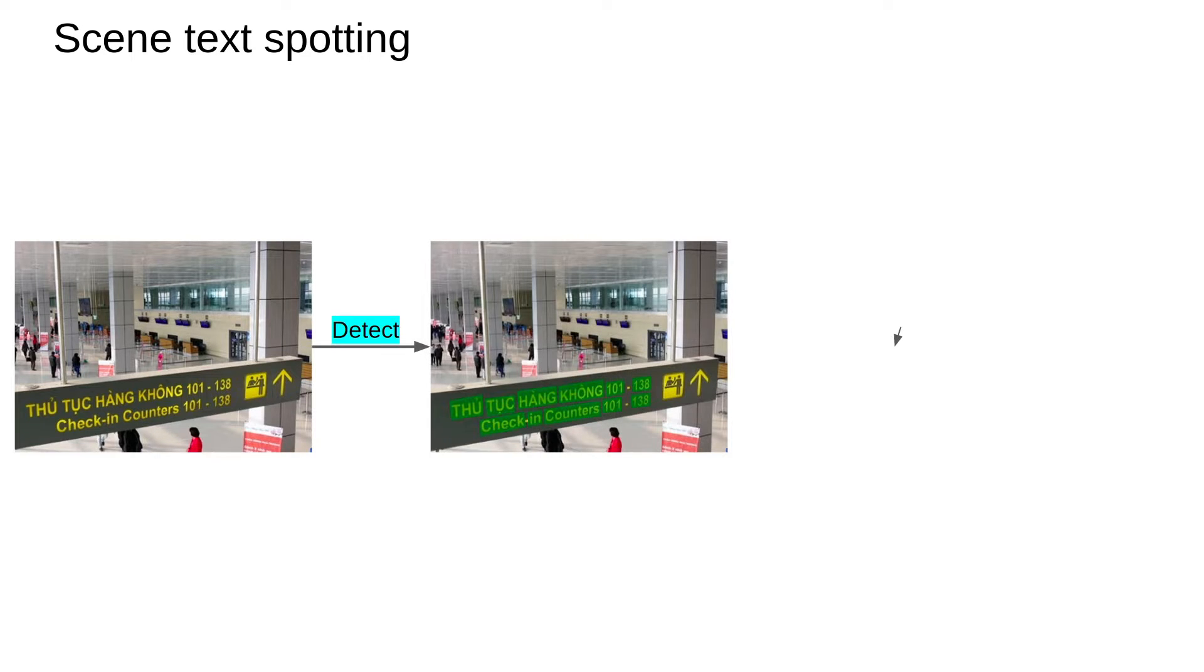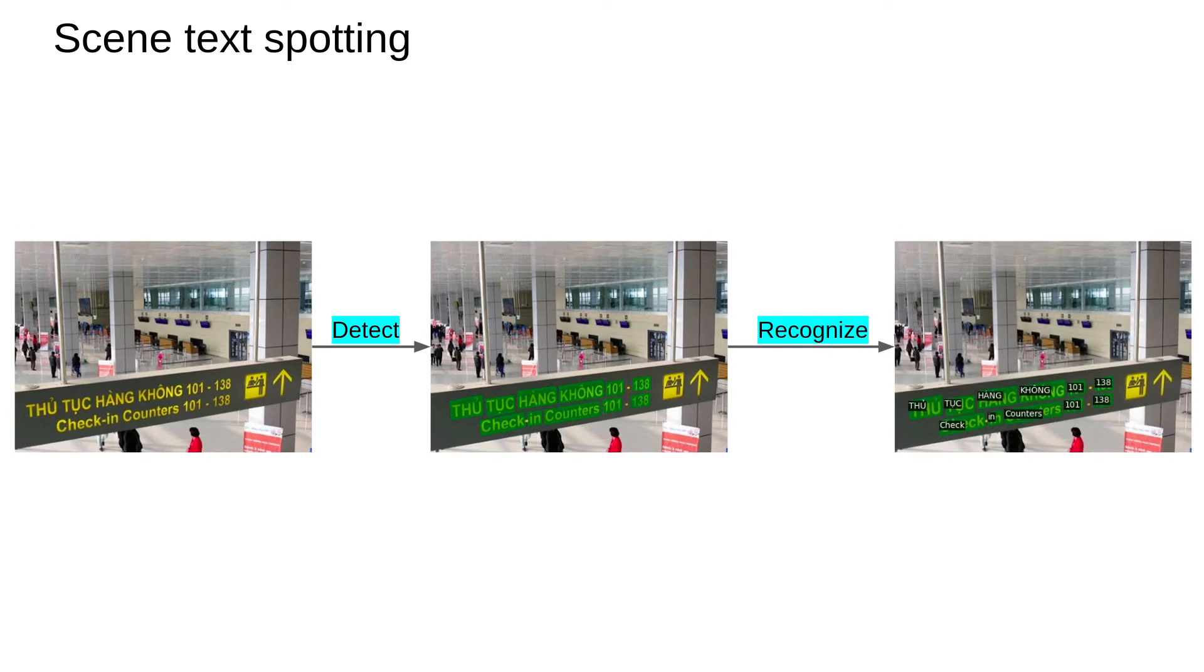This is a combined task of text localization and text recognition. Text localization locates text position on the image or video. Text recognition recognizes text inside detected boxes. The recognition phase uses the output of detection as its input. In this paper, we focus on the recognition branch without any changes in the detection branch.